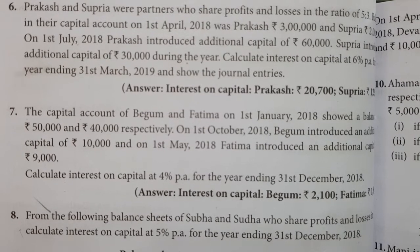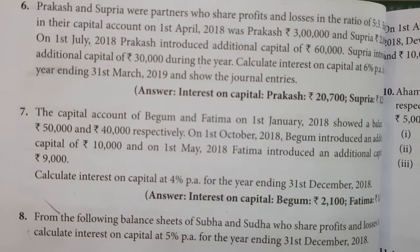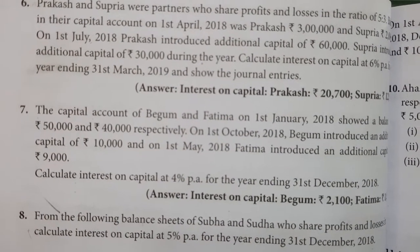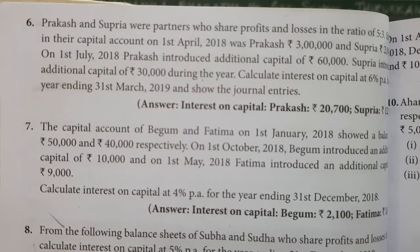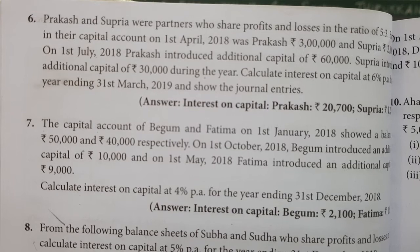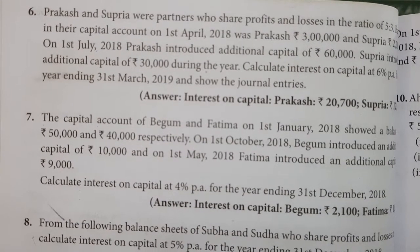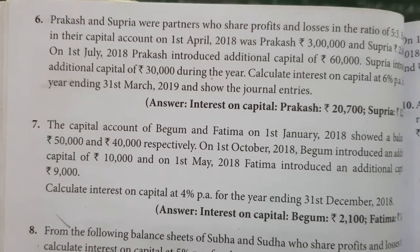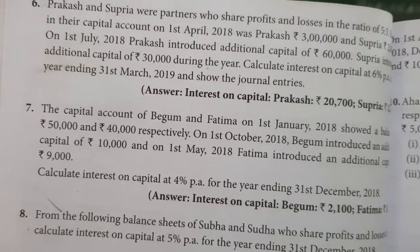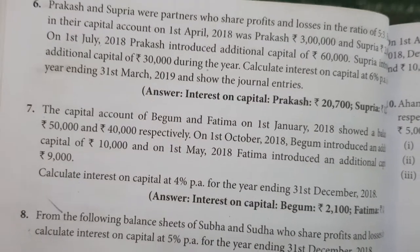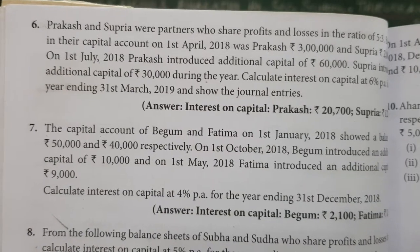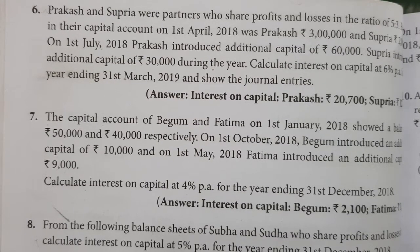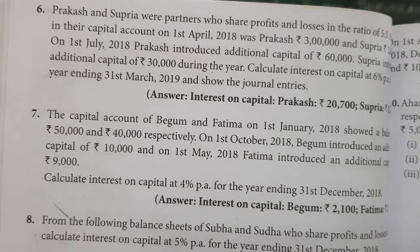In this problem we have opening capital and additional capital. We need to find the number of months for the additional capital. Starting from 1st July, the months are: July, August, September, October, November, December, January, February, March — that is 9 months.